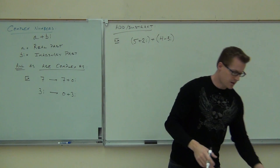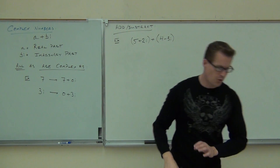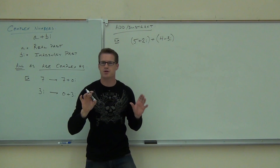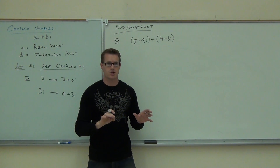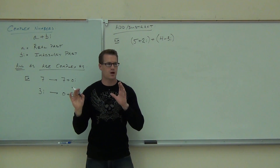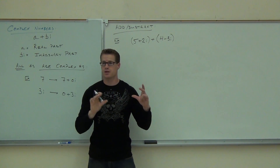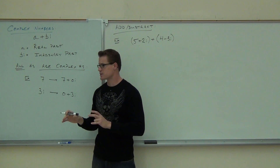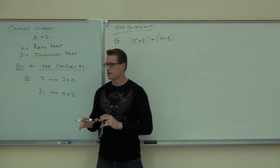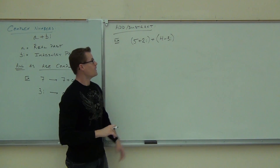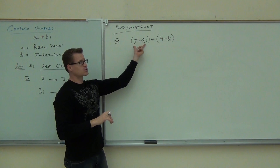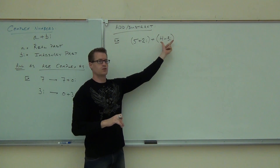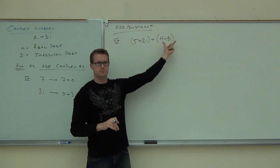Let's do (5 + 2i) + (4 − 3i). The only reason these parentheses are even there is to show you that I have one complex number plus another complex number. Can you guys see the complex numbers? I know it's weird to you because this is new. That's one number. That's one number.